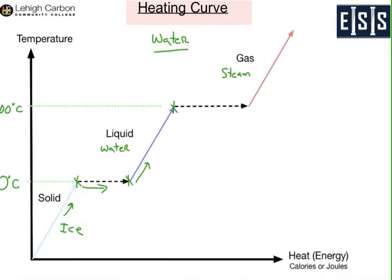Now if you provide any more energy, you're going to convert that water into steam. The temperature does not change — it's still 100 degrees centigrade — but every bit of energy you give it is converting that liquid water to steam until you hit this point. Now you have all steam, no more liquid water, and you're still at 100 degrees centigrade.